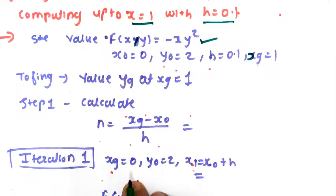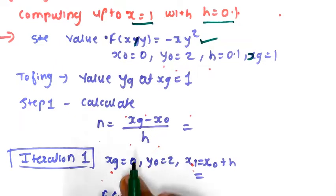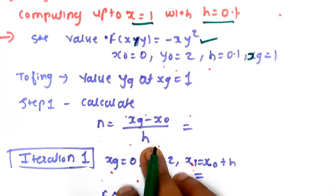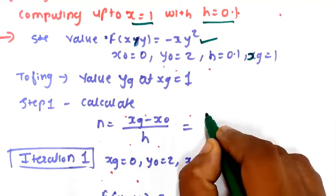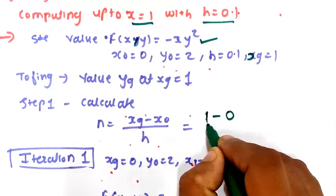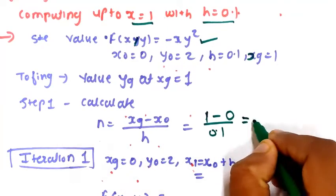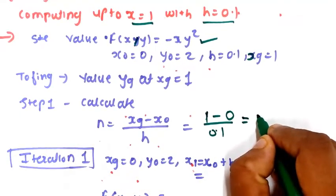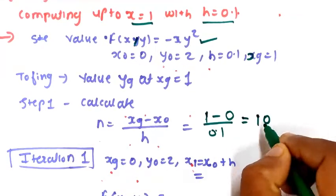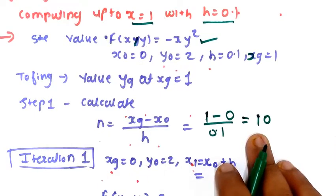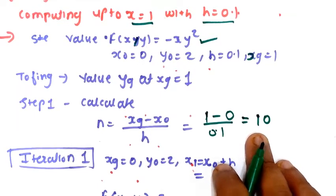The first step is to calculate n, the number of iterations, using the formula n = (x_n - x₀) / h. Putting in the values: (1 - 0) / 0.1 = 10. So the number of iterations n is 10.